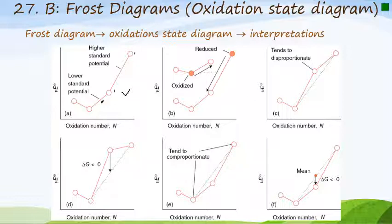Diagram B shows the tendency towards oxidation or reduction. If starting from a species with an upward positive slope, that species will be oxidized. If starting from a species and moving downwards, that species will be reduced. This is how we determine the tendency towards oxidation or reduction.